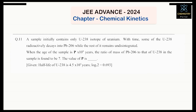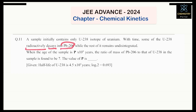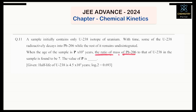Read the question. A sample initially contains only the U-238 isotope of uranium. With time, some of the U-238 radioactively decays into Pb-206 — Pb means lead — while the rest remains undisintegrated. When the age of the sample is P×10⁸ years, the ratio of mass of Pb-206 to that of U-238 in the sample is 7. We need to find the value of P. The half-life of U-238 is given as 4.5×10⁹ years, and log 2 = 0.693.